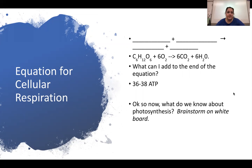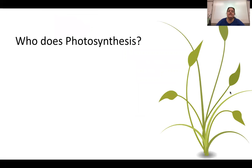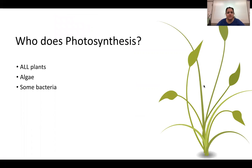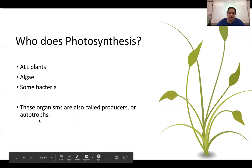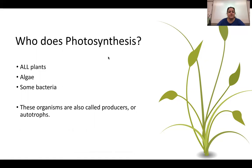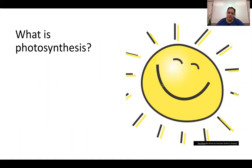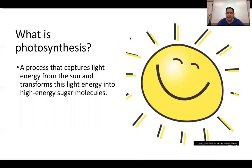You might know that photosynthesis occurs in plants, and you might think of the chloroplast from our cell unit. So, who does photosynthesis? All plants, algae, and some bacteria do photosynthesis. The organisms that do photosynthesis are called producers or autotrophs — we'll see that term again in the ecology unit.